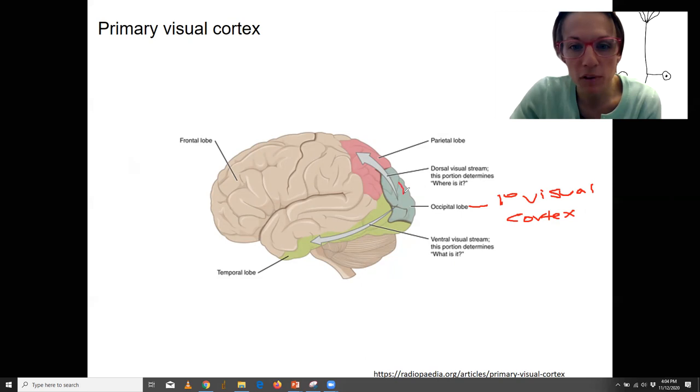So you have a whole stream of information that goes on to tell you about where is it. So motion sensitivity. You've got a whole stream of information that tells you what is it. So details of color and defining what it is. So we're not going to go more into that, but there's a whole lot more steps needed to process visual information.